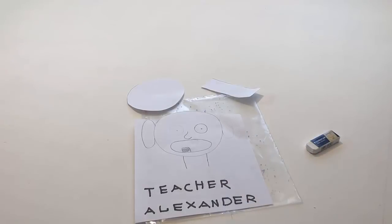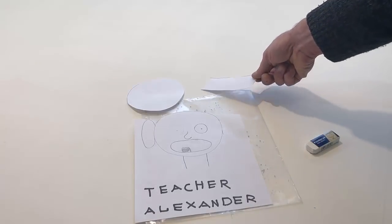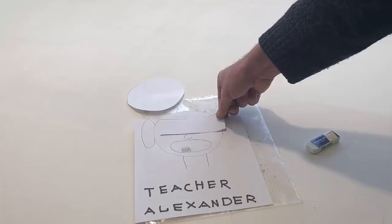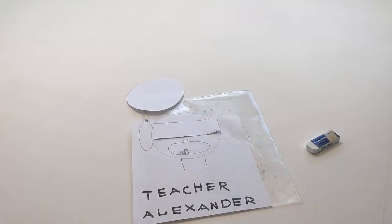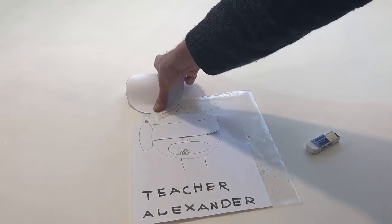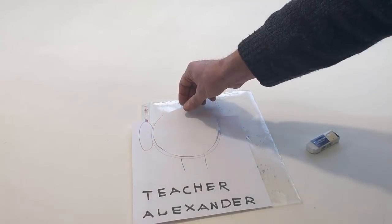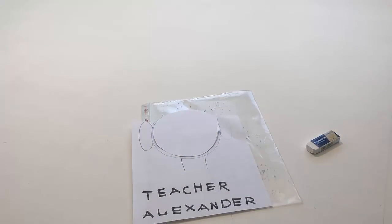Take the rectangle and cover my eyes. Take the circle and cover my face with it. Remove the circle and remove the rectangle.